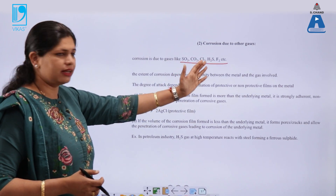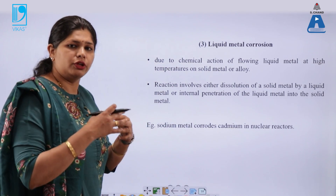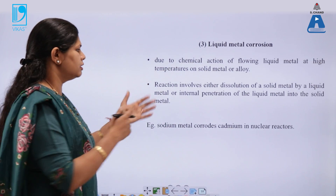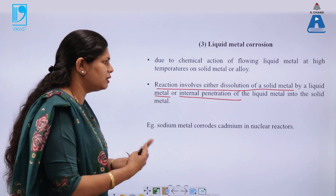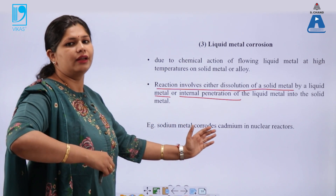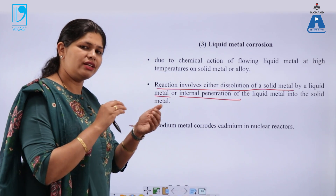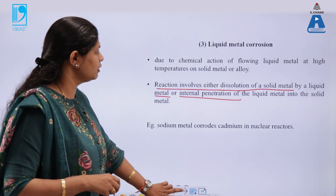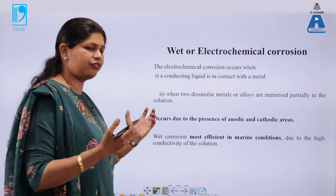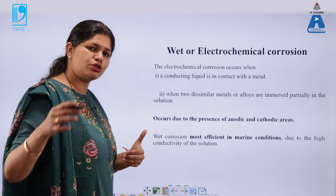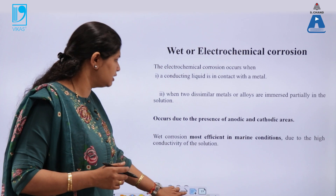Corrosion due to other gases — the important gases responsible for corrosion are sulfur dioxide, carbon dioxide, chlorine, and so on. The third is liquid metal corrosion, in which the reaction involves either dissolution of a solid metal by a liquid metal or internal penetration of a liquid metal. For example, cadmium gets corroded in a nuclear reactor due to the presence of sodium metal in the liquid state — this is metal-to-metal corrosion. In wet or electrochemical corrosion, there must be cathodic and anodic areas where electron transfer takes place, facilitated by water, oxygen, or any electrolyte.